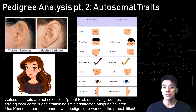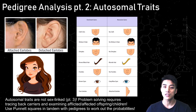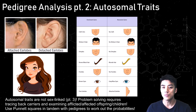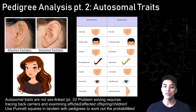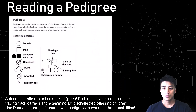Autosomal traits are more common traits — things like cleft chin, widow's peak, dimples, attached versus detached earlobes, and so forth. So let's jump right into it and check it out.